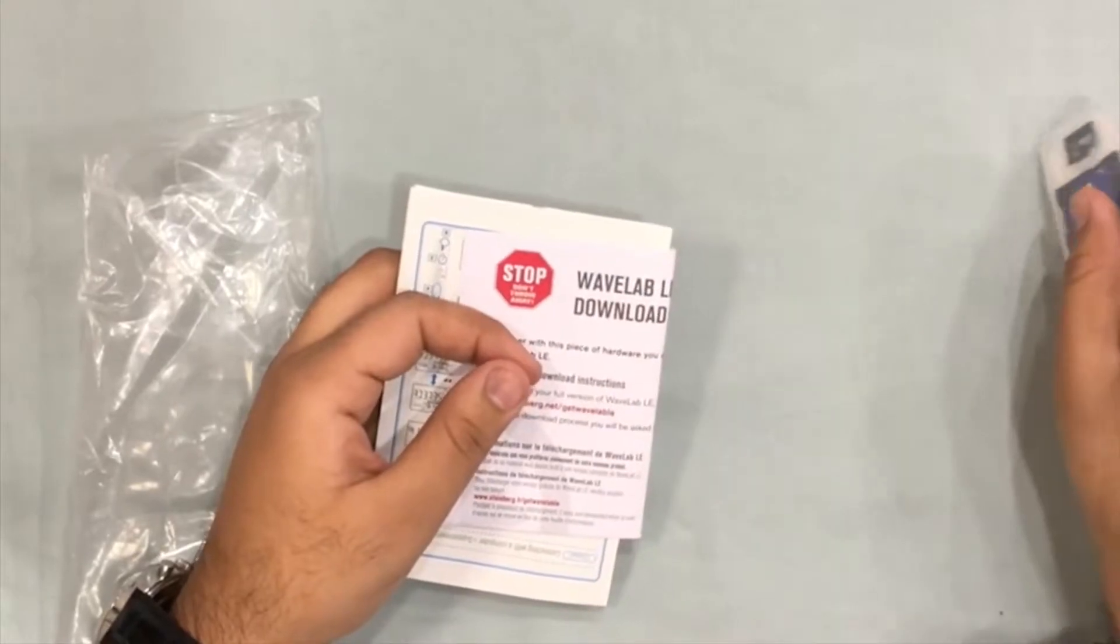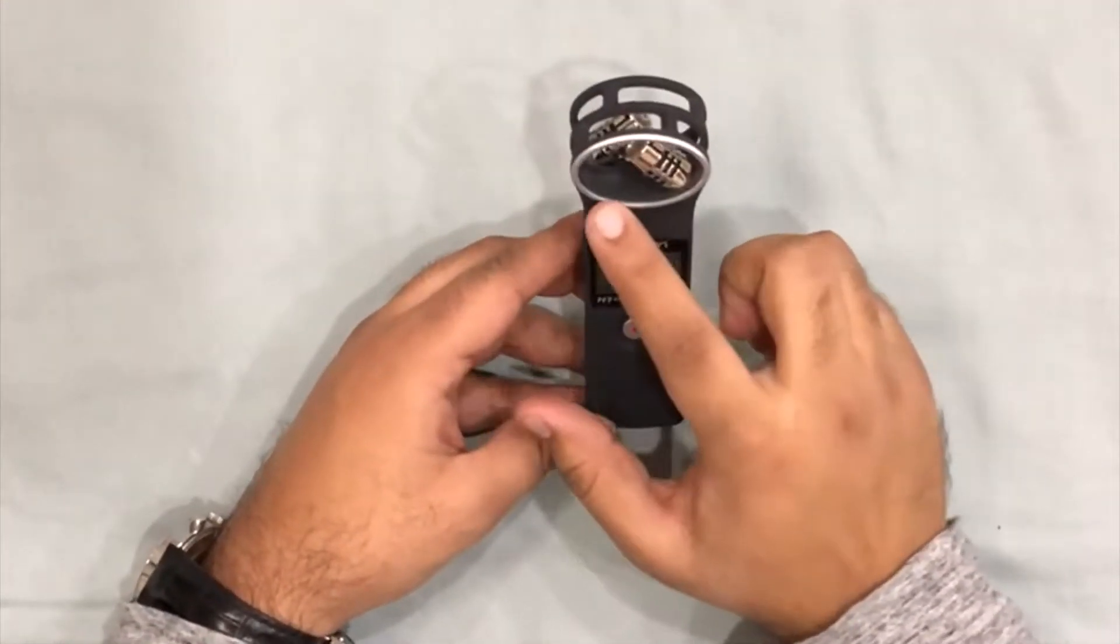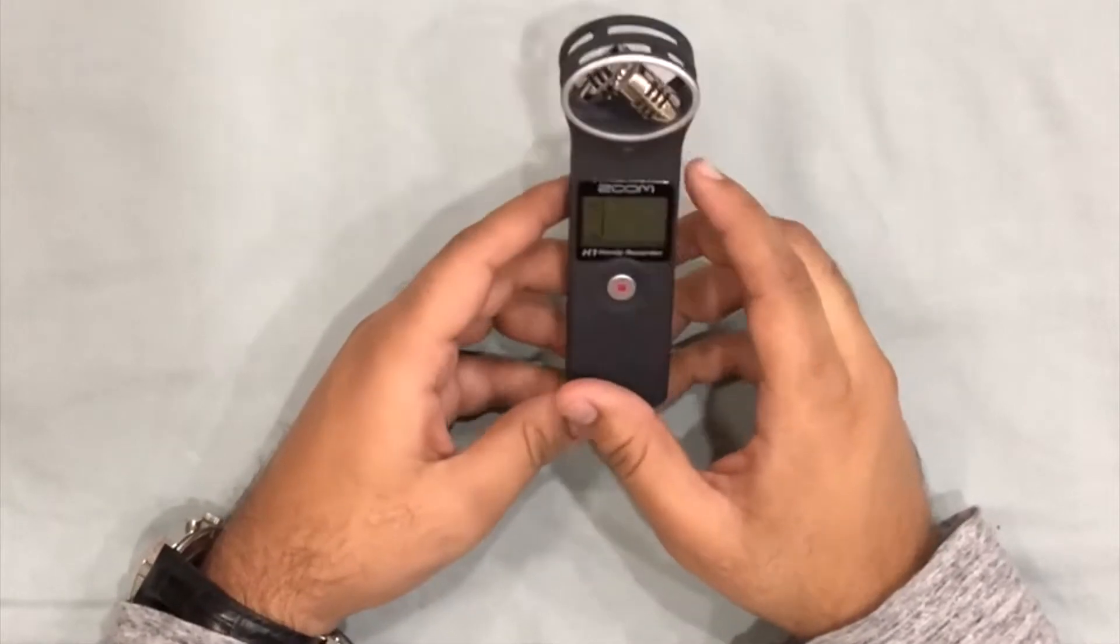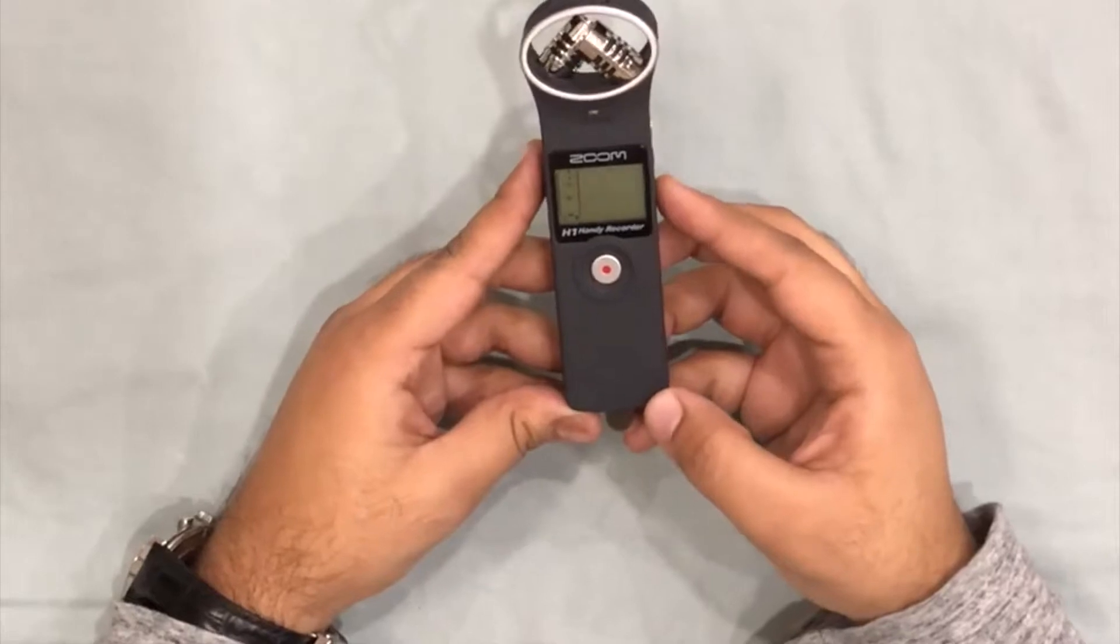This is the Zoom H1 device which you can use to record your audio. It has a small screen along with a record button to start and stop recording. On the right hand side, you'll find a USB DC 5-volt port with power on/off/hold button and a delete button to delete your saved audio files.